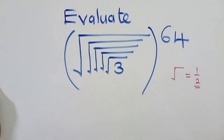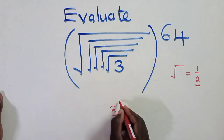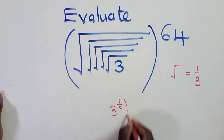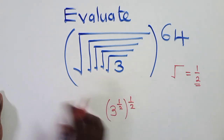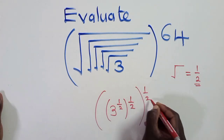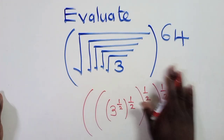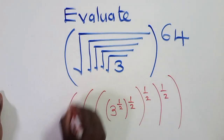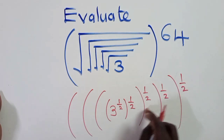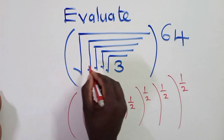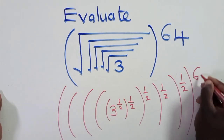And this is how it's going to look like. We shall have 3, power 1 over 2, power 1 over 2, power 1 over 2, power 1 over 2, power 1 over 2 — that's 5 of them. And then outside here, there is a 64.